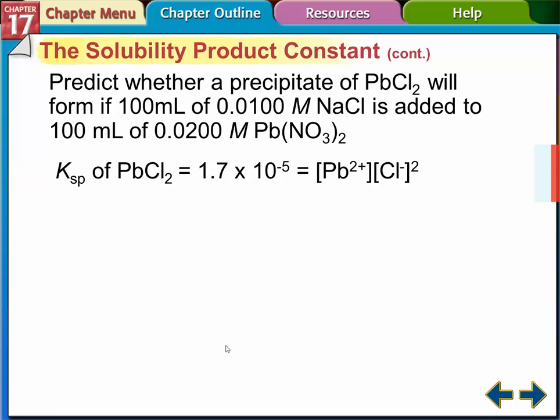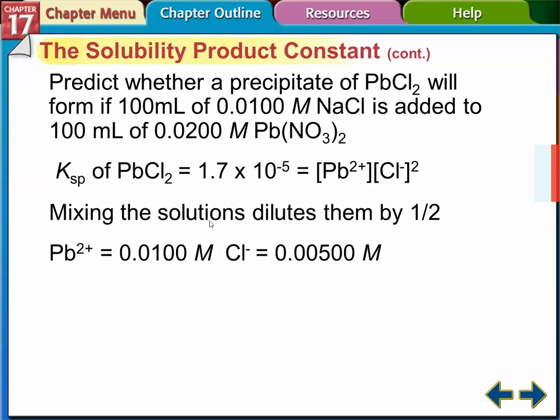Okay, so how do we do that? So we look at the Ksp for lead, it's the concentration of the lead times the concentration of the chlorine. The chlorine is squared because of this two right here. So you have to get two chlorines, right? So you get two ions here, you get one lead and two chlorines. So that squared is right. Sorry about that.